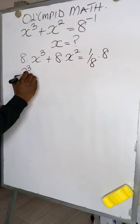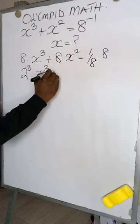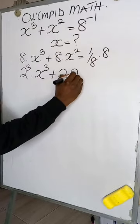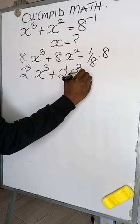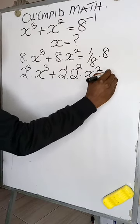So this is going to be 2 to the power of 3 multiplied by x to the power of 3 plus 2 multiplied by 2 squared multiplied by x squared, and this will be equal to 1.